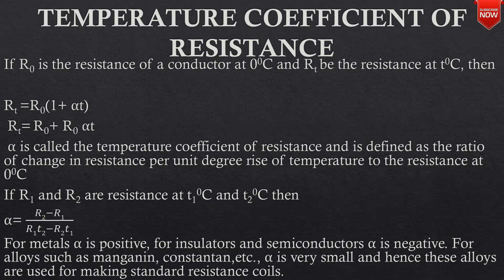If R1 and R2 are resistances at T1 degrees Celsius and T2 degrees Celsius, then alpha equals R2 minus R1 divided by R1 T2 minus R2 T1. For metals, alpha is positive. For insulators and semiconductors, alpha is negative.